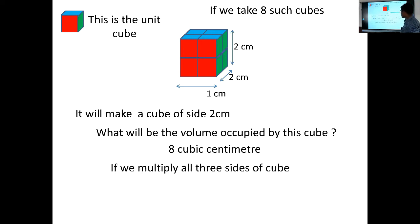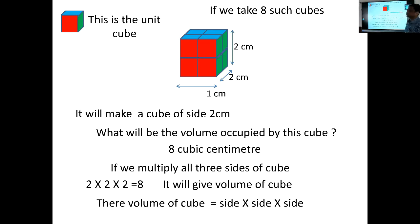If we multiply all three sides of the cube, if I multiply side with side with side - 2 multiplied by 2 multiplied by 2 - we are getting 8. And my dear friends, this is nothing but the volume of cube. So how to find the volume of cube? Volume of cube can be found by multiplying side of cube with side with side.